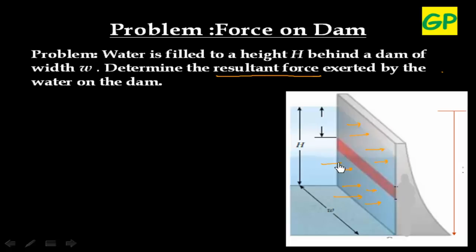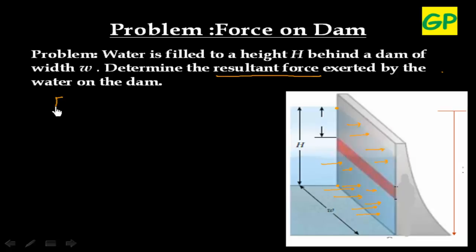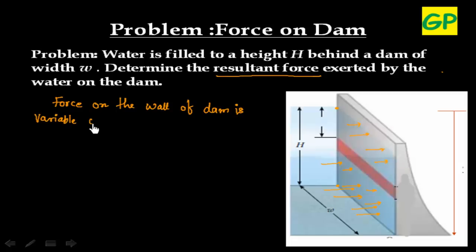The water is applying a force everywhere on the wall of the dam, and this force is not constant because pressure is not constant. At the top point you have lesser pressure, and at the lowest point you have more pressure. This means force — that is pressure times area — is not constant. Force is variable with height, or you can say with depth.